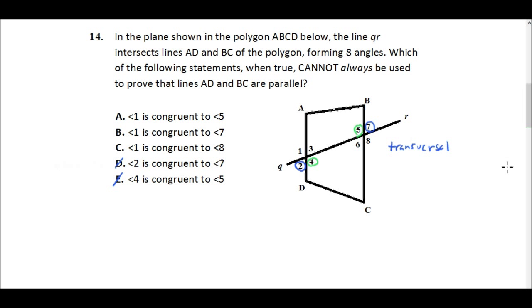So let's look at C. All right, C says, I'm just going to change colors here, C says angle one is congruent to angle eight. Well, we're in the same position. Again, we have the alternate exterior angles congruent, and so C is out.